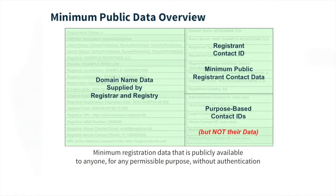There are three categories. The large category on the left is domain name data supplied by the registrar and registry — that's creation date, renewal date, updated dates, statuses — things that others may need to use and view. Then the top right is the registrant contact ID, a number associated with the registrant, with only minimum public data available. Also in that minimum public data are the purpose-based contact IDs — once again, a number, nothing else. If you're not telling the RDS who you are and why you want the information, you're not walking through the door to get more.